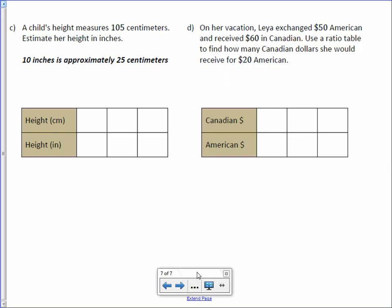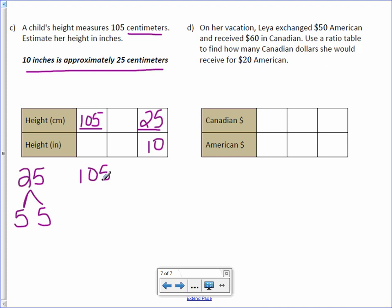A child's height measures 105 centimeters. Estimate her height in inches. Okay, so a child's height is 105 centimeters. Then we have this conversion here: 10 inches and 25 centimeters. It's okay that you move left in your column as well as right.